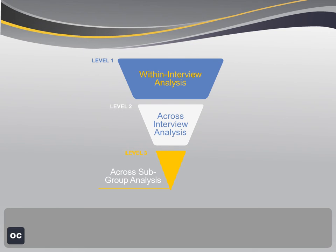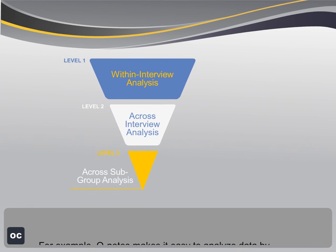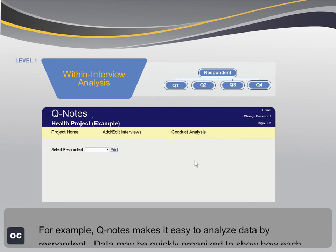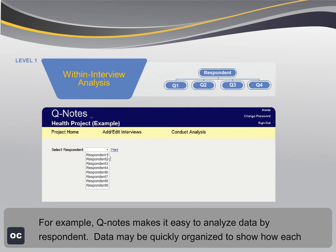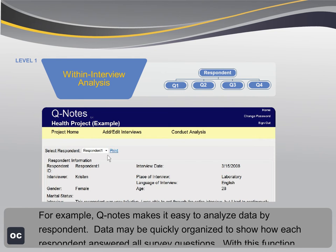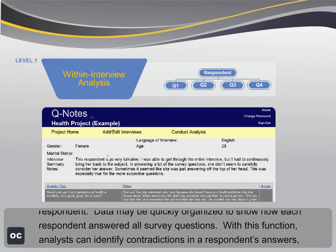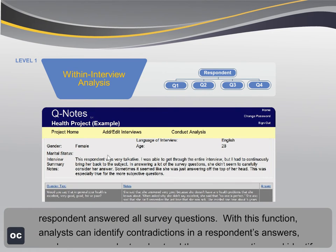For example, Q-Notes makes it easy to analyze data by respondent. Data may be quickly organized to show how each respondent answered all survey questions. With this function, analysts can identify contradictions in a respondent's answers, see how a respondent understood the survey question, and identify where the response error may have occurred.